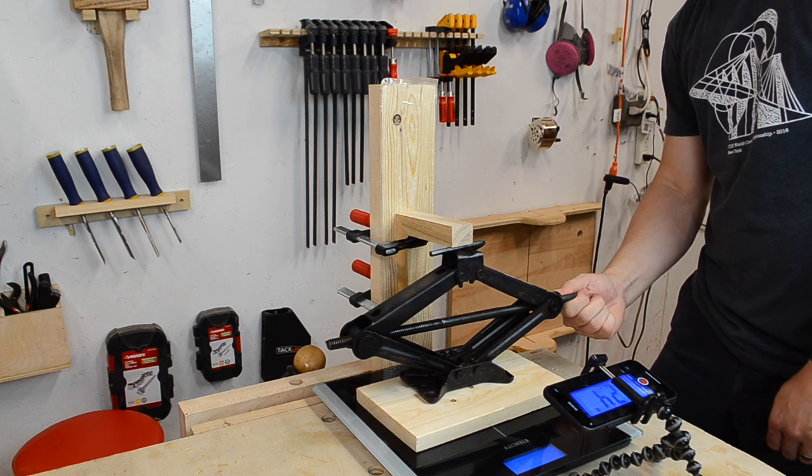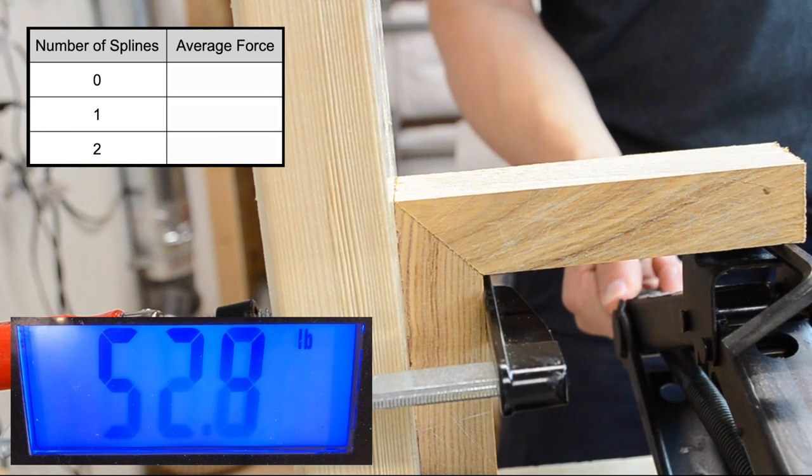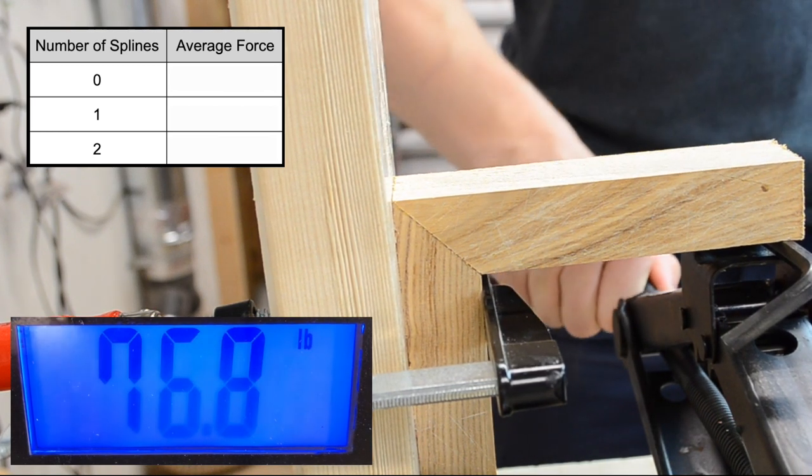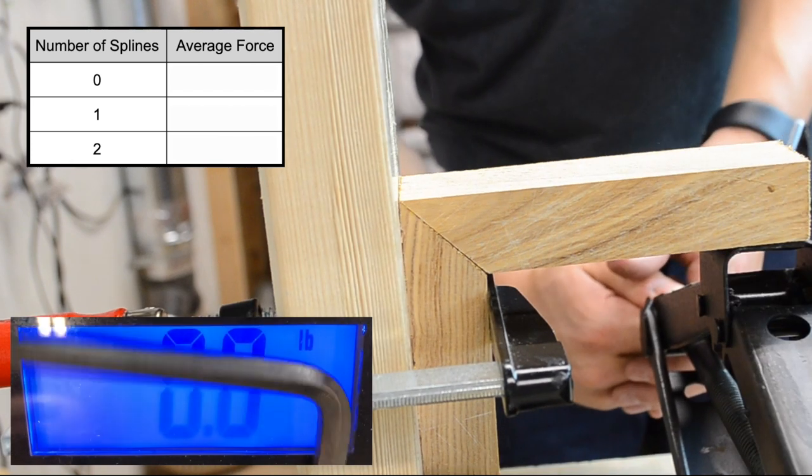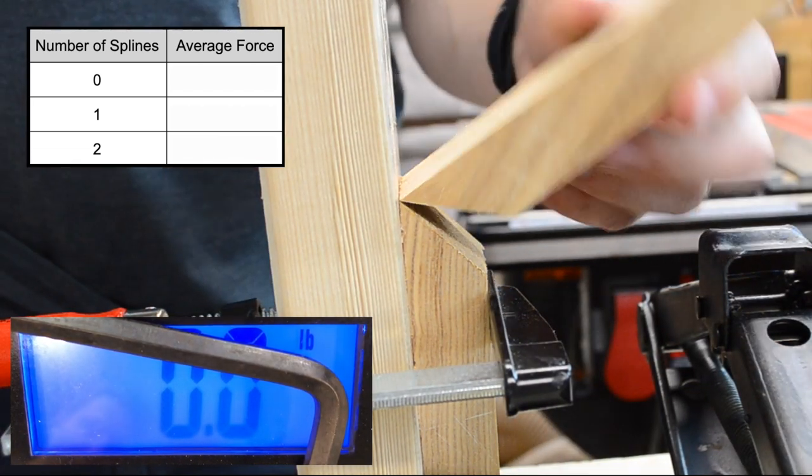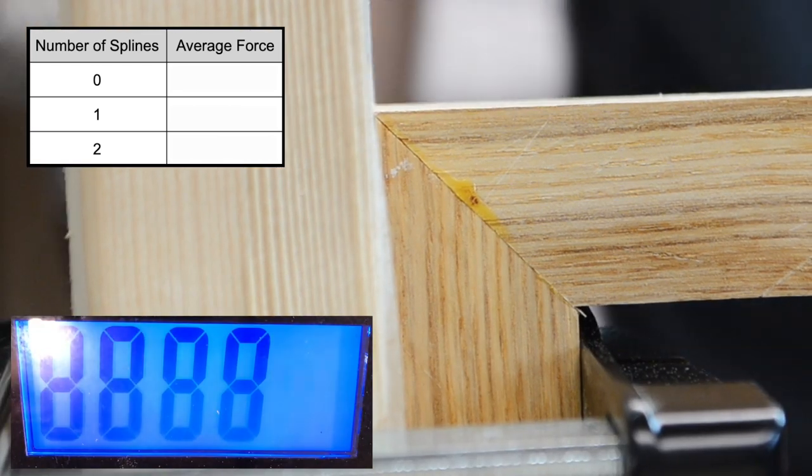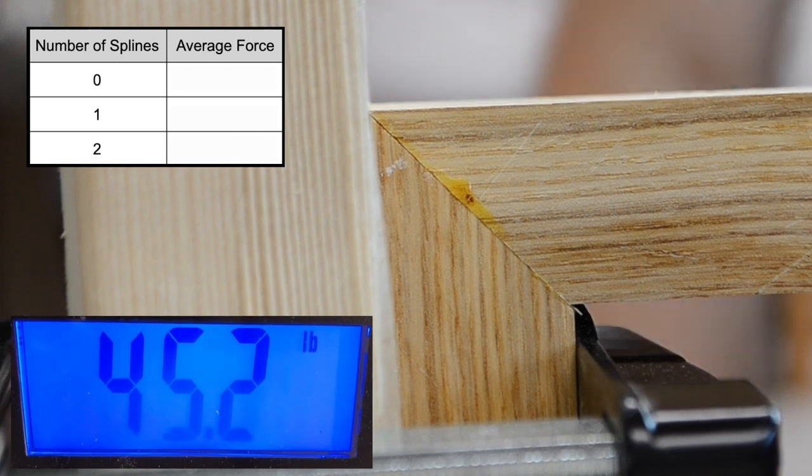I started by breaking the miter joints with no splines in them. Unfortunately I forgot to turn on my cell phone camera for the first of these, so I'm not sure how much force it took to break, but for the next three they required 92 pounds, 113 pounds and 116 pounds to break, with an average of 107 pounds.